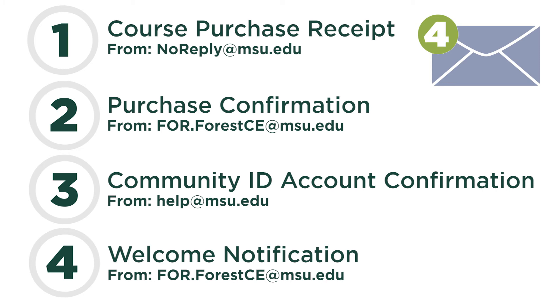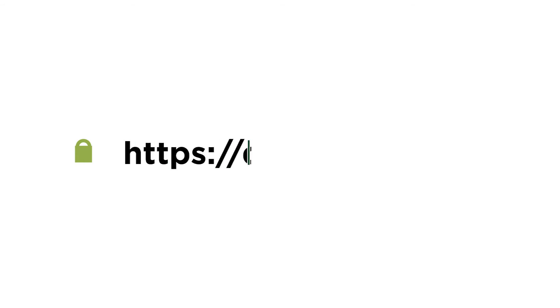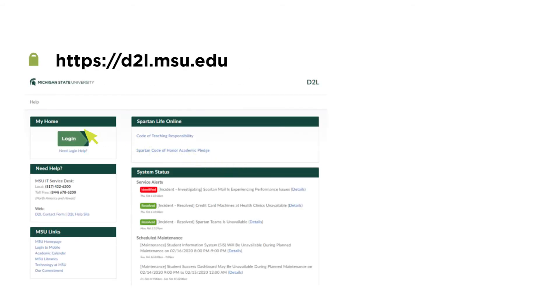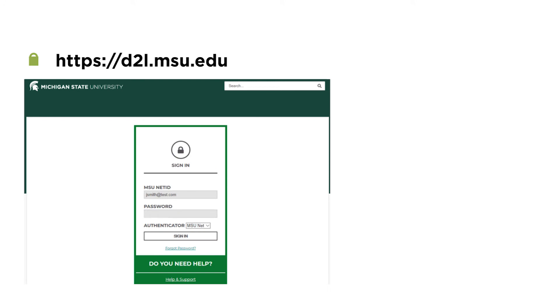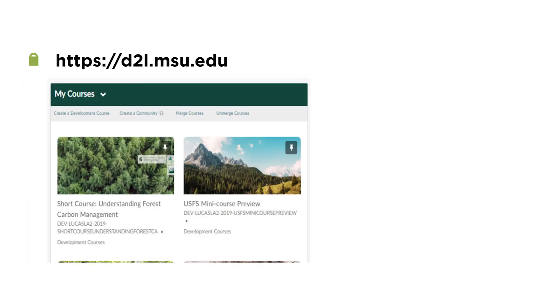After reviewing each of these emails, you are ready to begin your course. Your welcome notification email will provide instructions for how to access the course page. Alternatively, you can visit d2l.msu.edu, select login, enter your Community ID and password credentials, and view your collection of active courses on your course homepage.